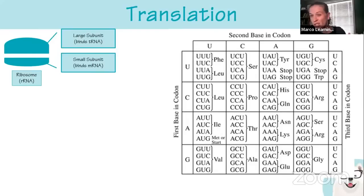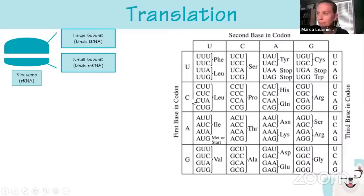The codon chart is given to you on the exam. To read it, find the first base across and look for the second base going down. For example, CAC — find C across, look for A down, and find the codon in that square: HIS (histidine). That's how you read the codon chart.